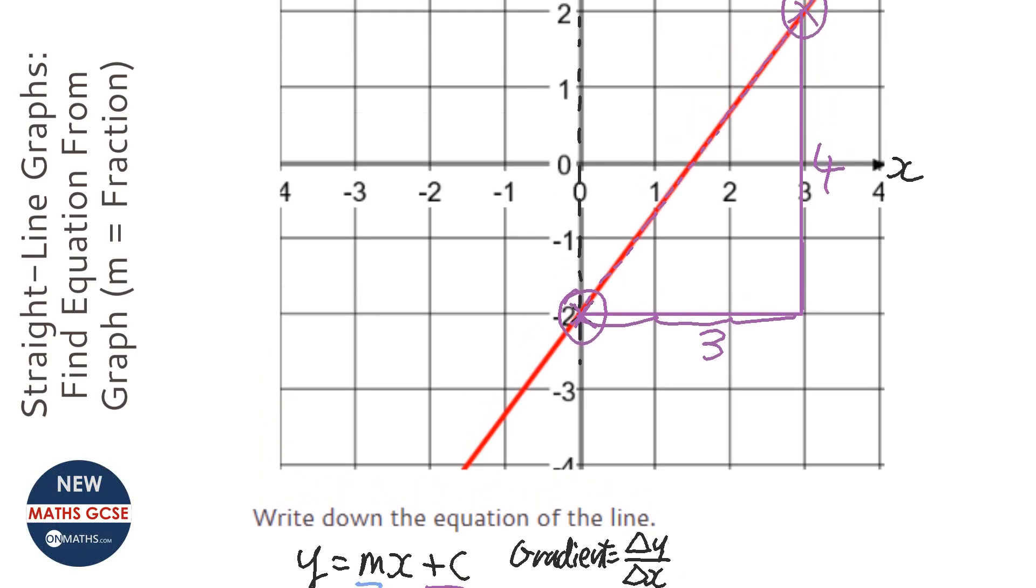Now notice here that it is change in y over change in x. The most common mistake with this is to make it 3 over 4, but it's always change in y first with the gradient.